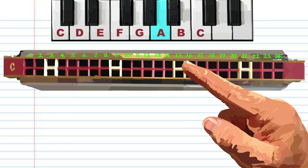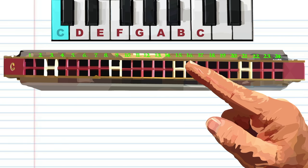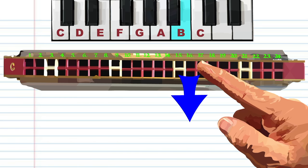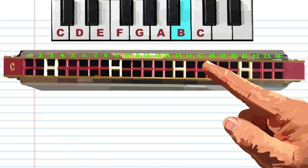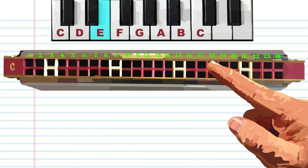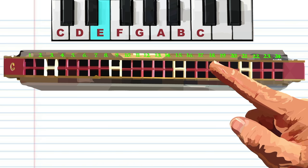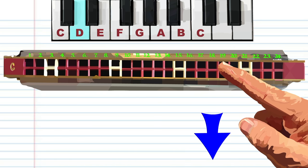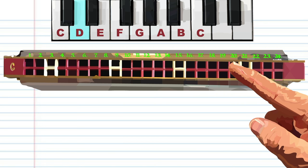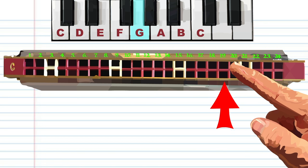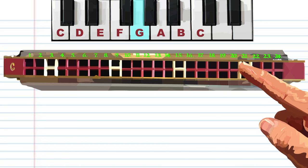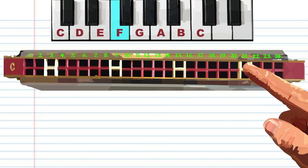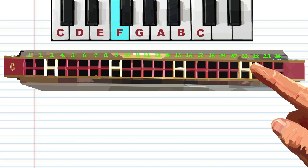But blowing into 15 is C. Breathing in through 16 is B. Blowing into 17 is E. Breathing in through 18 is D. Blowing into 19 is G. Breathing in through 20 is F.